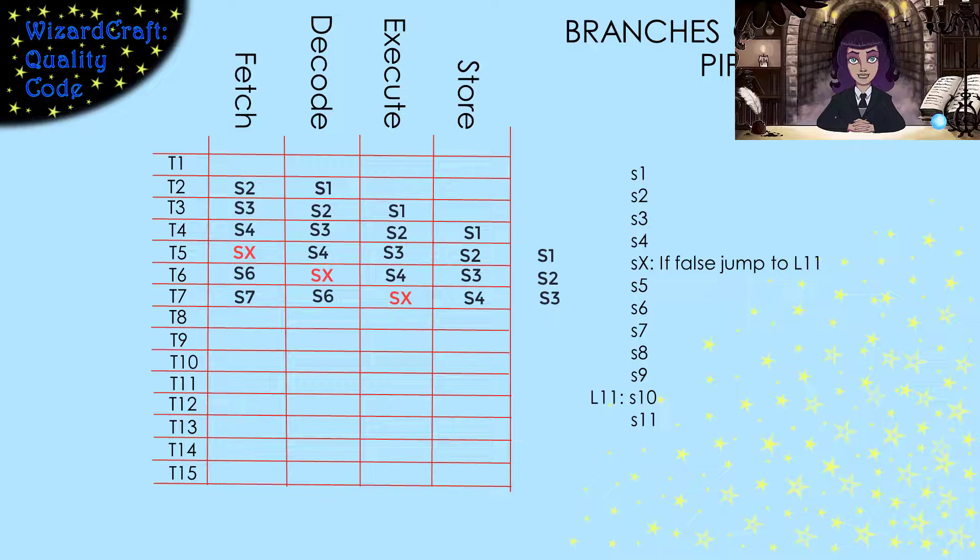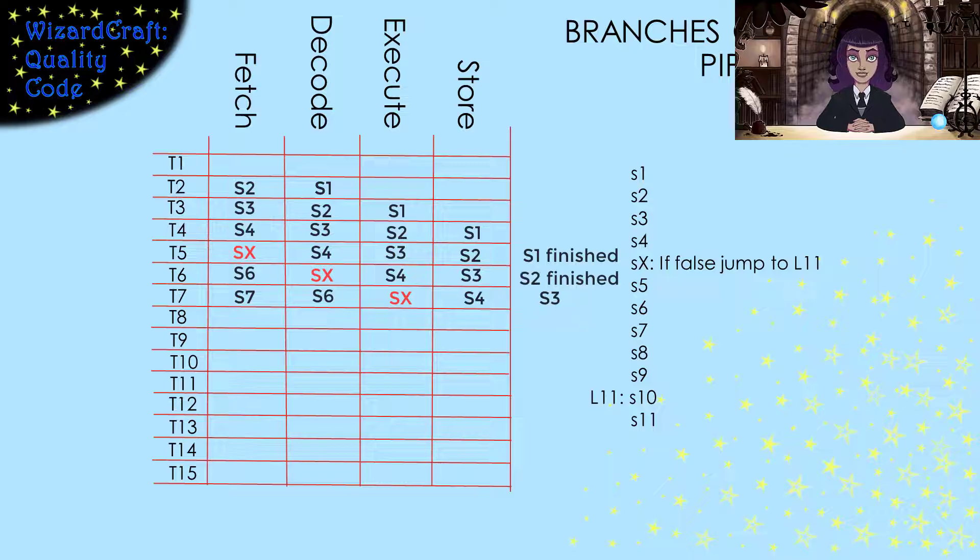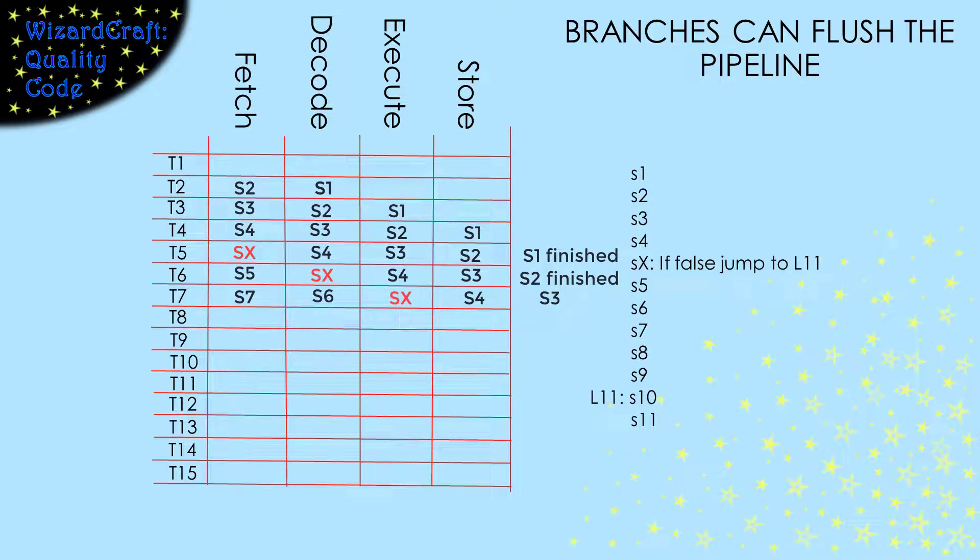Remember, that's the phase that had the multiplexer that's choosing which value will be used for the next PC. Suppose the condition says that we don't take the conditional jump. Then the next statement we should execute is S5, and that's the next thing in the pipeline. So, not taking the conditional jump doesn't hurt the pipeline at all.